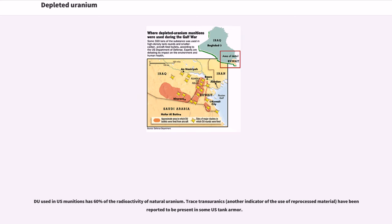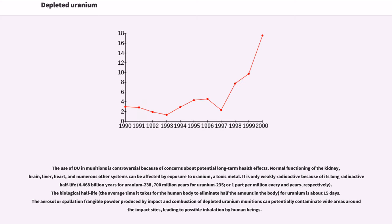DU used in U.S. munitions has 60% of the radioactivity of natural uranium. Trace transuranics, another indicator of the use of reprocessed material, have been reported to be present in some U.S. tank armor. The use of DU in munitions is controversial because of concerns about potential long-term health effects.